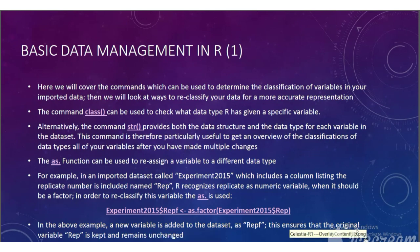The str command is therefore particularly useful to get an overview of the classification of data types of all of your variables after you have made multiple changes. The as.dot function can be used to reassign a variable to a different data type. For example, in an imported data set called Experiment2015, which includes a column listing the replicate number named Rep, R will recognize replicate as a numeric variable when it should be treated differently.